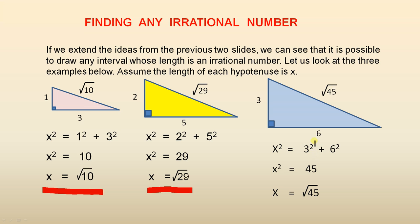And finally, if we have a right angle triangle with a base of six and a height of three, we go through Pythagoras' theorem and we find that the length of the hypotenuse is the square root of forty-five, and that's an irrational number. So if you have any irrational number at all, you can always construct a right angle triangle and draw the length of that interval.